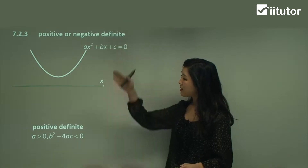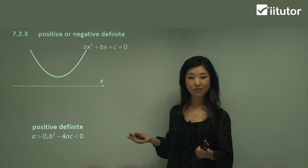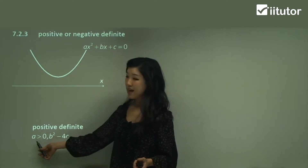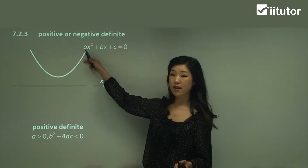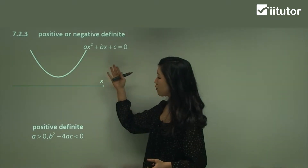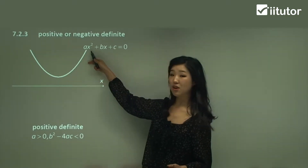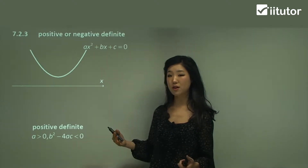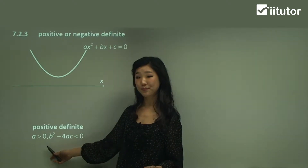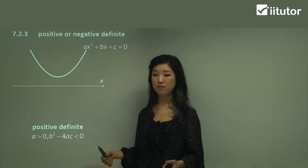In this case, can you see it's a happy face, which means a positive parabola. So therefore a, which is the coefficient of x², must be positive. For it to be a positive parabola, the coefficient of the leading term x² must be positive — that's why a has to be greater than zero. That's the first thing you must remember for positive definite functions.